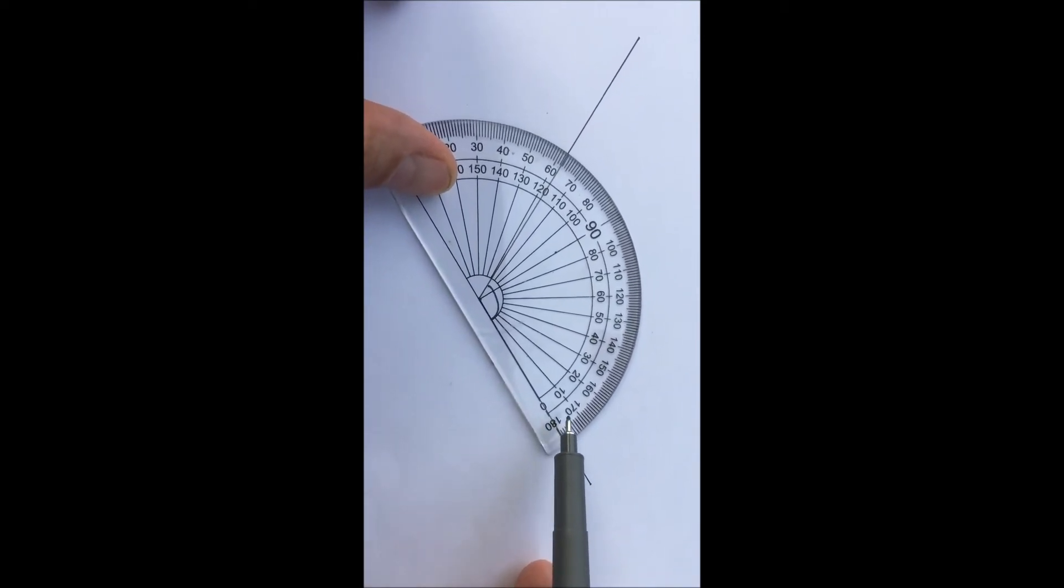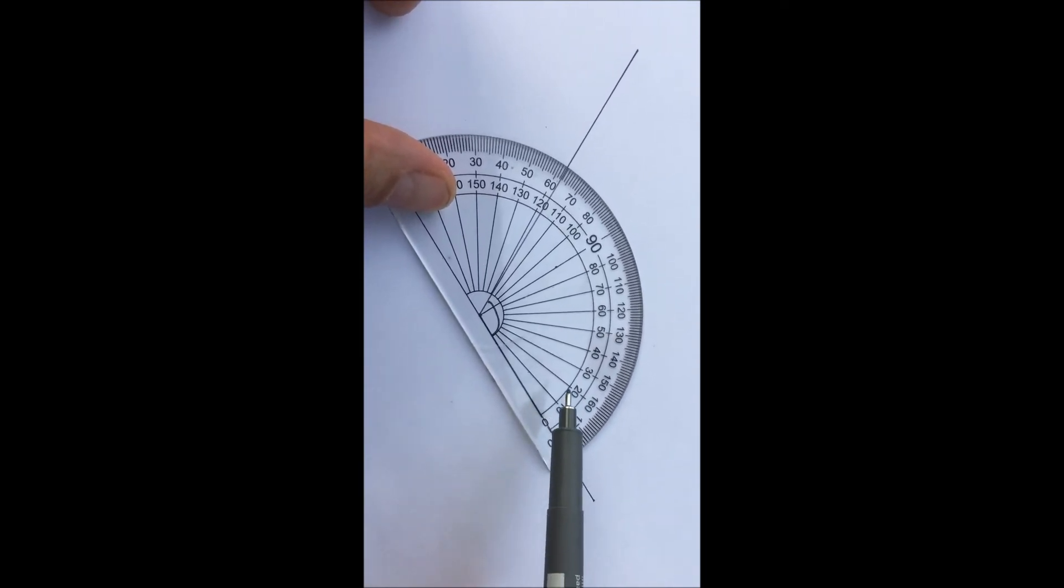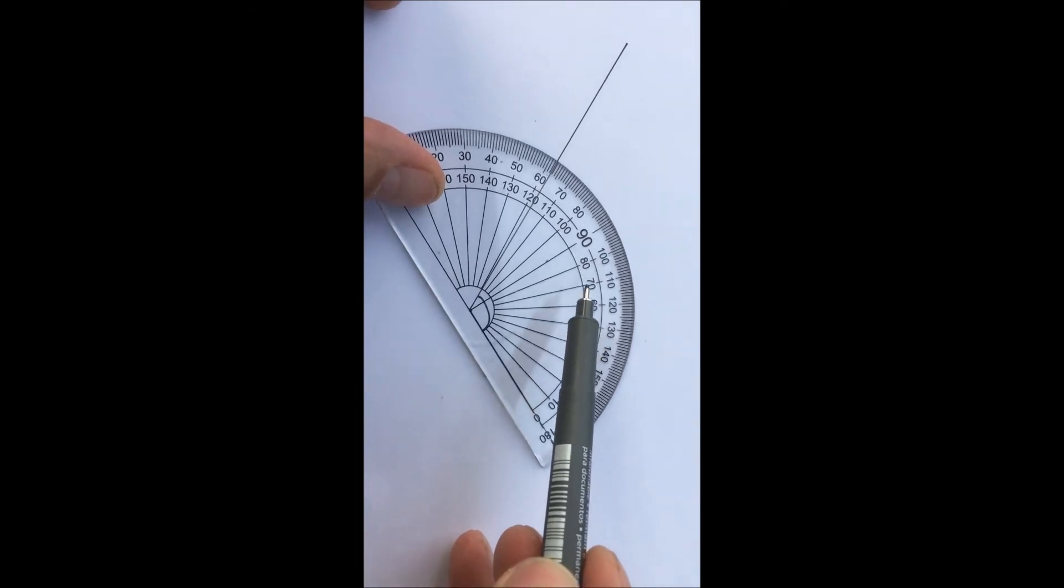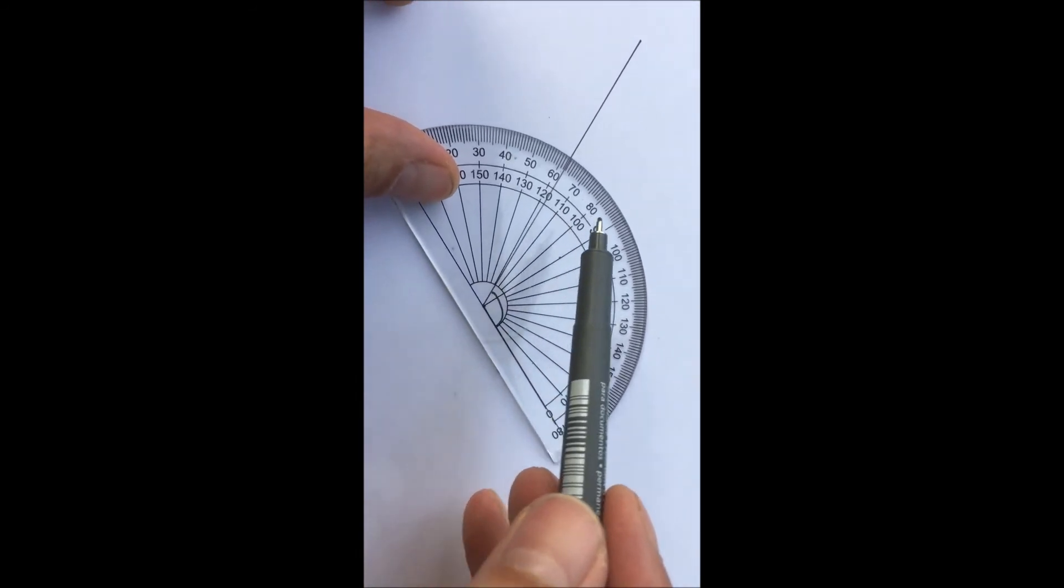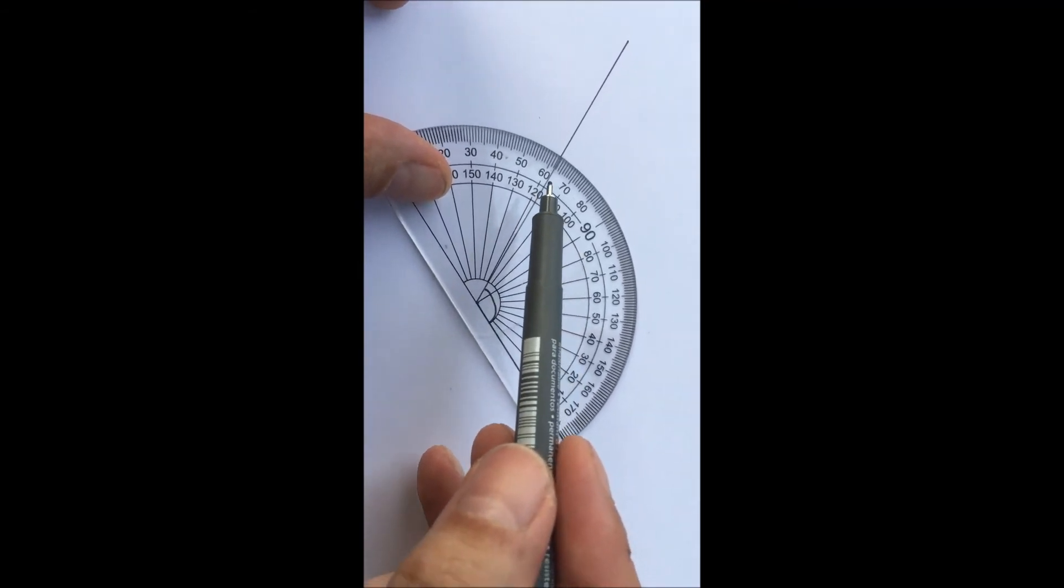You don't use these numbers in this case because we've lined it up with this zero. So you're measuring around here from the zero, and you get to here. You can see it's between 110 and 120, and that's where you have to be a little bit careful.